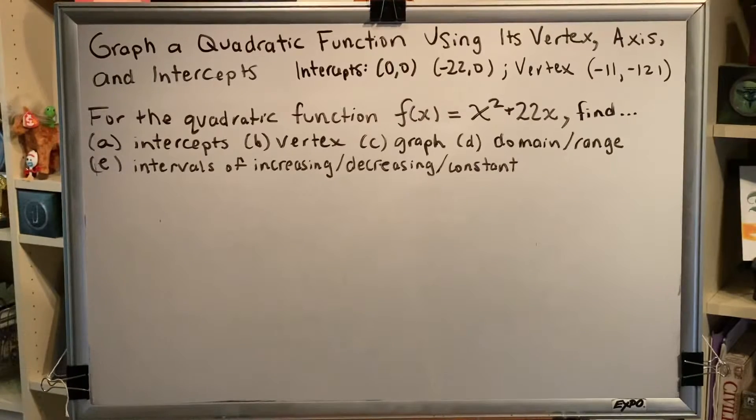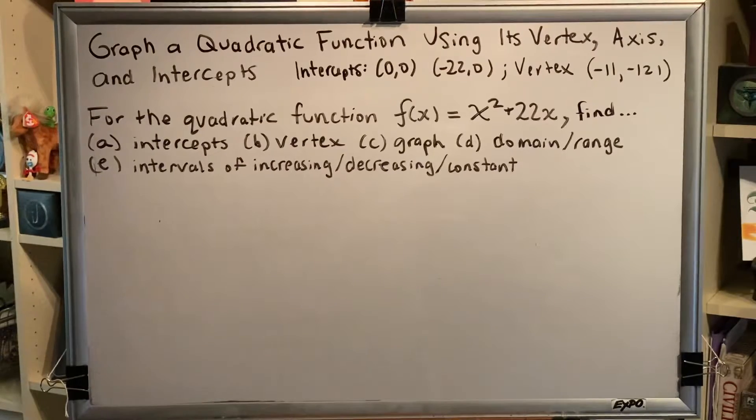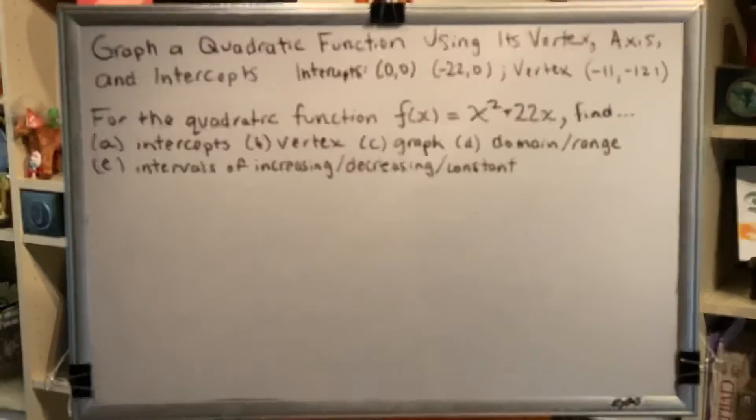The topic of this video is graphing a quadratic function using its vertex, axis, and intercepts. This is a continuation of the previous video. In our previous video we completed parts A and B, we found the intercepts and the vertex. We're now ready for part C, creating the graph.